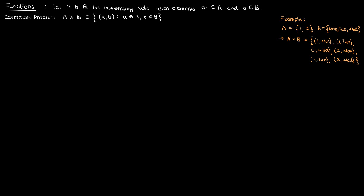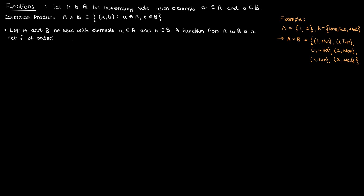The idea of Cartesian products leads us to the definition of a function. Suppose we have the sets a and b with elements small a and small b. A function from a to b is a set f of ordered pairs in the Cartesian product a cross b, such that for every element in a, there is a unique element in b. A function f from a to b is denoted by f: a → b.